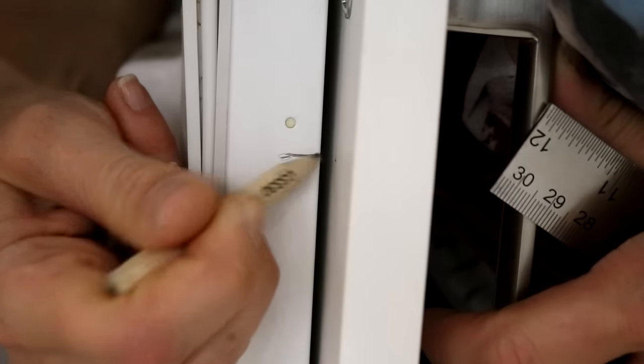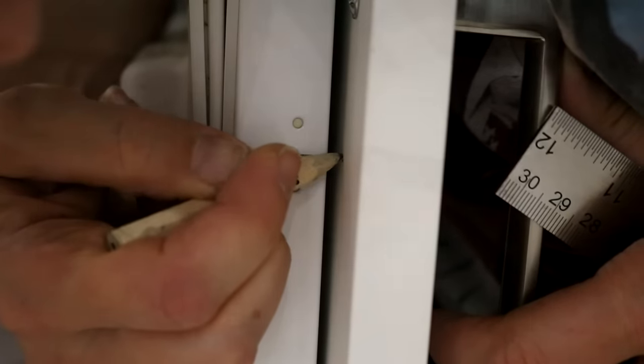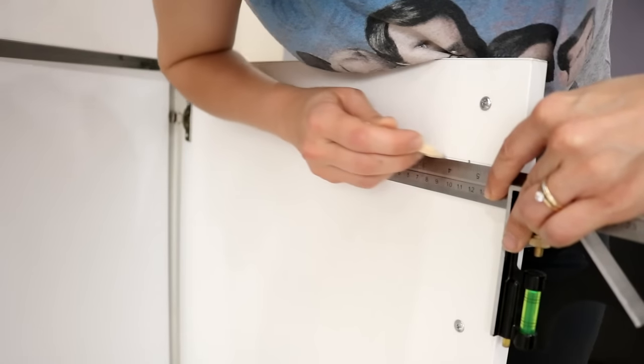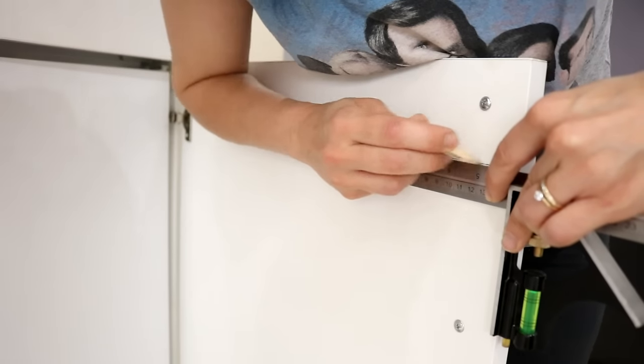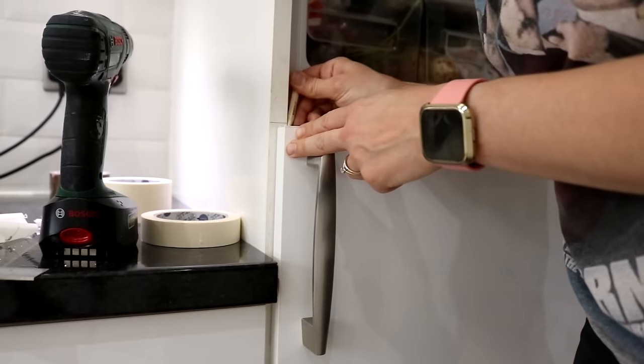Then transferring that to the back of the integrated door, and then I used a combination square to draw a straight line where those indents were. Then I opened the fridge door, which is above, so I could draw on the back of the freezer door.